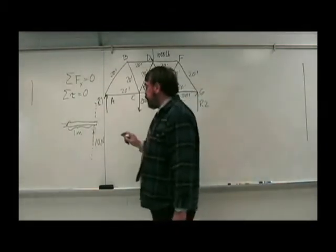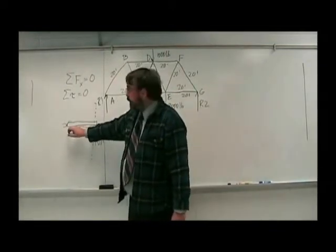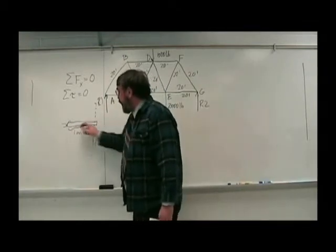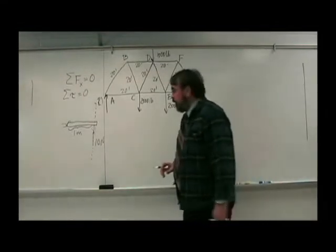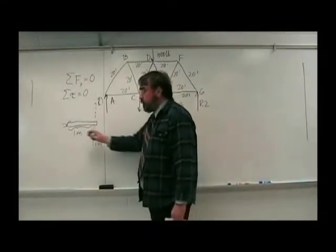And the lever arm is the shortest distance between the axis of rotation. The door is rotating around this, the hinges there, and this line of action. So that, in this case, is one meter. It's just the width of the door. So in this case, the torque would be 10 newtons times one meter.